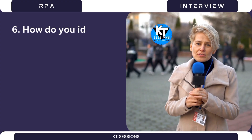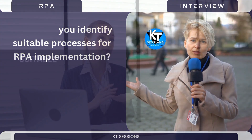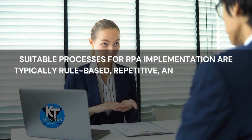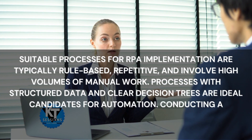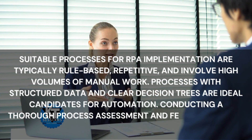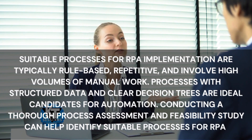Question 6: How do you identify suitable processes for RPA implementation? Suitable processes for RPA implementation are typically rule-based, repetitive, and involve high volumes of manual work. Processes with structured data and clear decision trees are ideal candidates for automation. Conducting a thorough process assessment and feasibility study can help identify suitable processes for RPA.